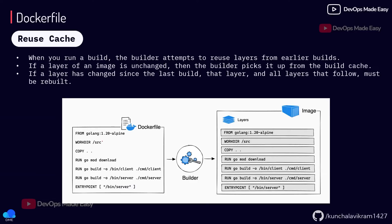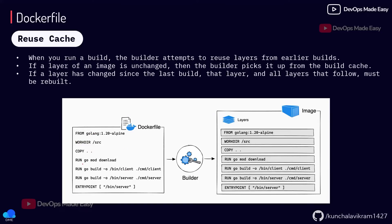Looking at this Dockerfile, the FROM instruction will not change usually, and WORKDIR src you won't change often. But here you are trying to copy files from your local machine to the image — if you make any changes in your local machine and copy them into the image, this instruction will always change. Which means if this COPY instruction changes, all the instructions after it should be rebuilt. If there is any change in one step, from that point all the instructions will be built — the cache will be invalidated and rebuilt.